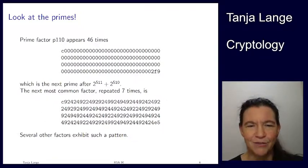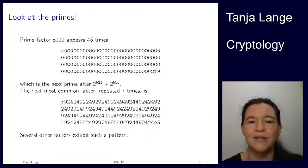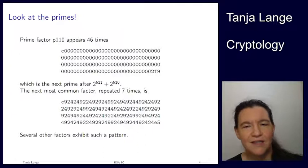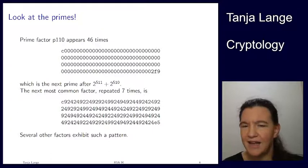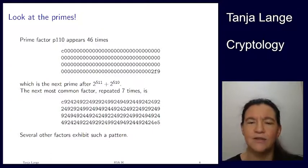And then also the next prime, next most common factor repeated seven times, one of the petals of this flower picture. Also there you like, if you stare at this, you're seeing lots of runs. There's like 2, 4, 9, 4, 9, 2.